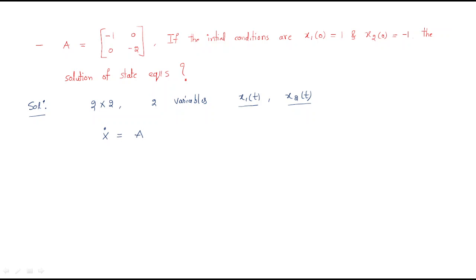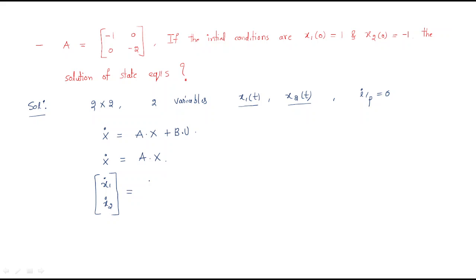Since no input is given, the input is zero, so the equation simplifies to x-dot = Ax. Here x-dot has two variables: x1-dot and x2-dot. The matrix A is [[-1, 0], [0, -2]] and the state vector x is [x1, x2].